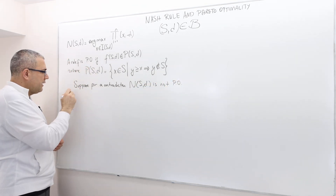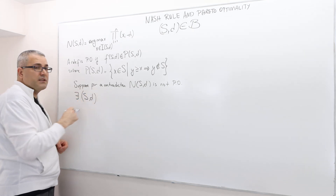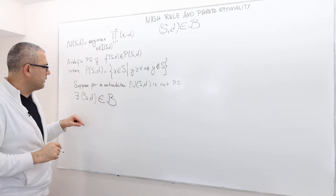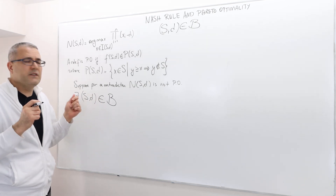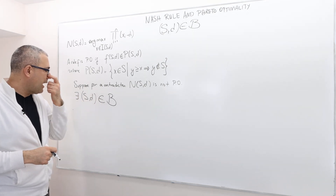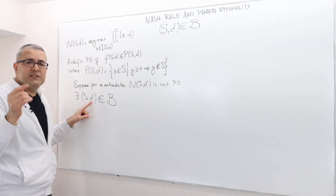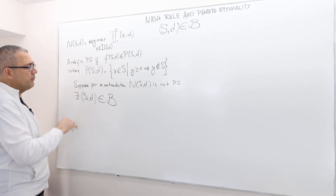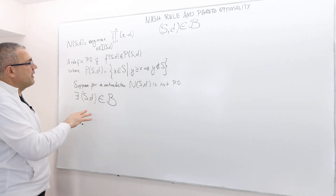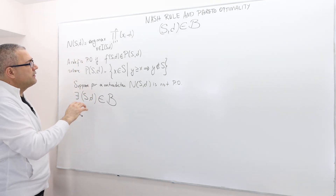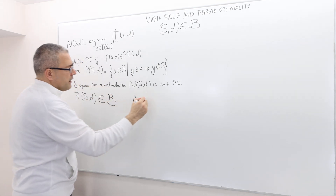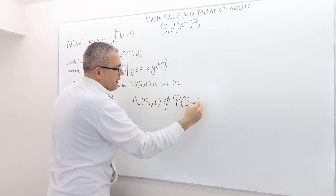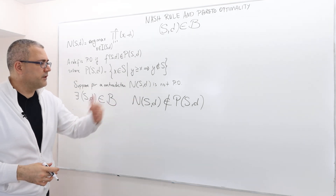What does that mean? That means there exists some bargaining problem — it has to be convex, closed, bounded, and D must have at least one alternative strictly higher than D — such that the Nash solution is not in the set P(S,D). Suppose for contradiction this is true.